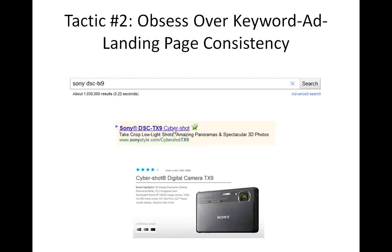This is one of the most common mistakes that a lot of people make when they manage their own pay-per-click campaigns — their landing pages are not consistent with the ads. So people can click on a Sony DSC-TX9 CyberShot ad, and some advertisers take those visitors to their home page or to their cameras page, but not to the right page for that specific product. It's really important that you look at all the keywords in your campaign and check Google AdWords to see what page is assigned to each keyword.